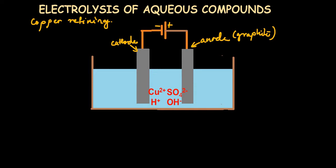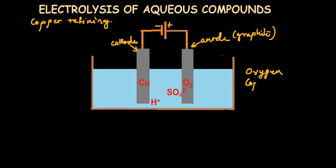Let's see what happens in this electrolysis, since it is similar to copper refining. The hydroxide ions move towards the positive terminal, forming oxygen gas at the anode. At the cathode, the copper ions gain electrons to form copper metal.